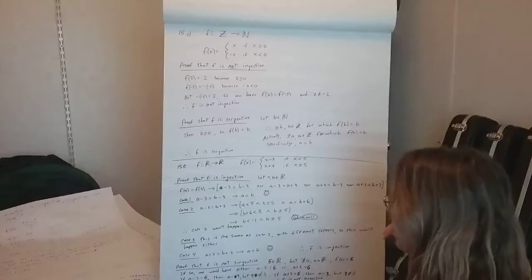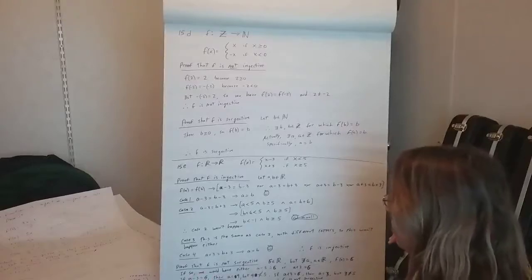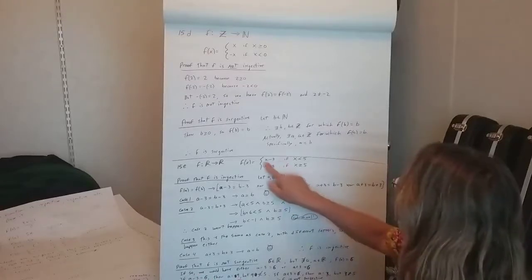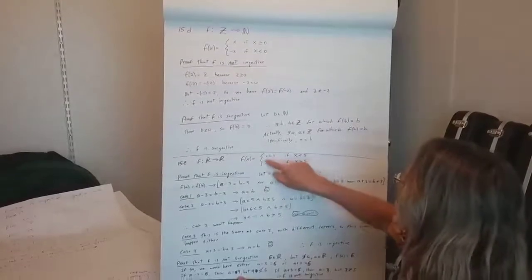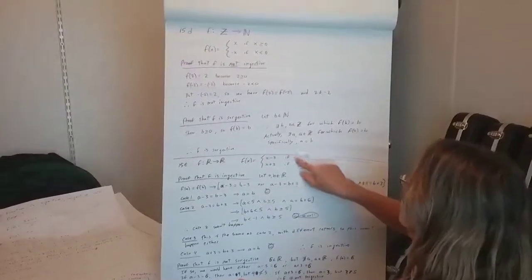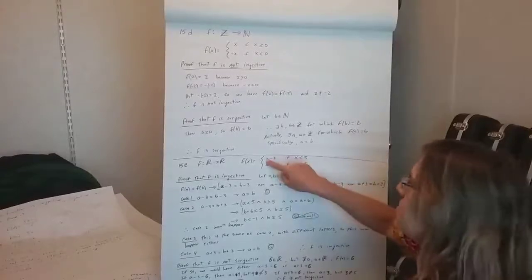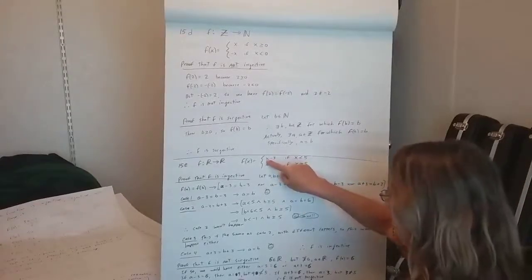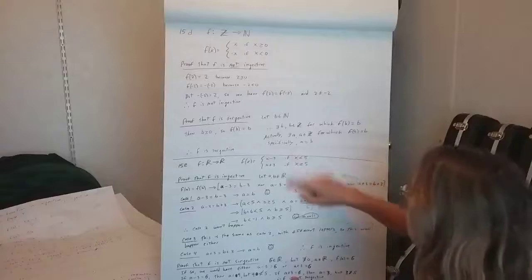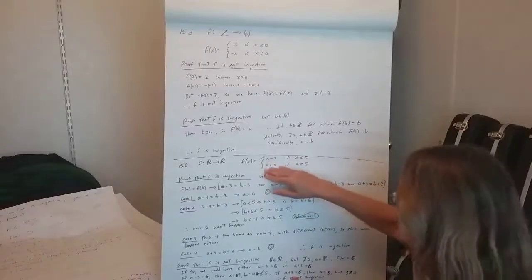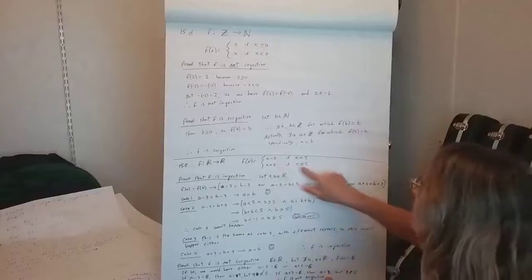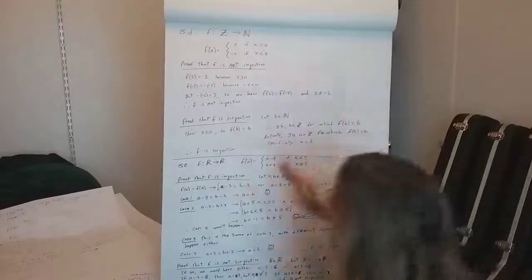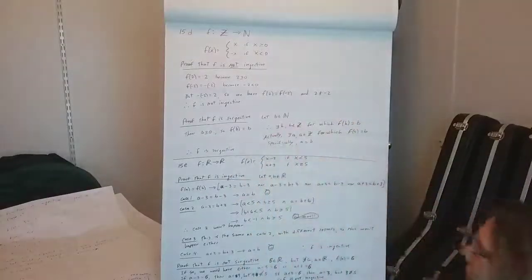Okay. If a minus 3 is 6, then a is 9. Ah, well then how could we use that one if the input, so 9 isn't less than 5, so we wouldn't have been doing that, right? Okay. If a plus 3 is 6, then a is 3. But 3 isn't bigger than 5, so, so basically we, that won't work. Okay.